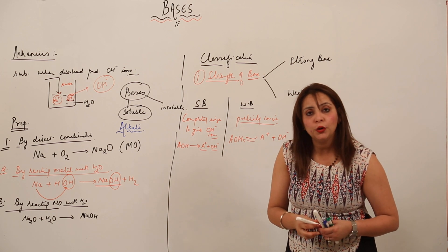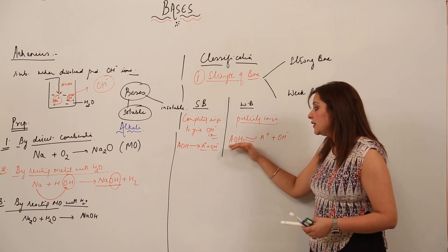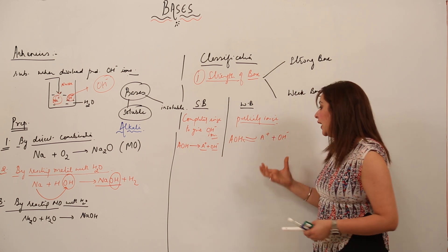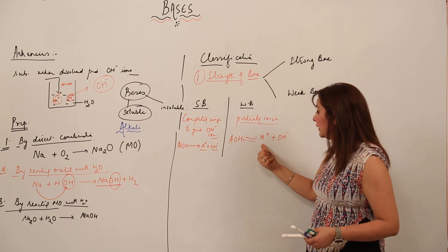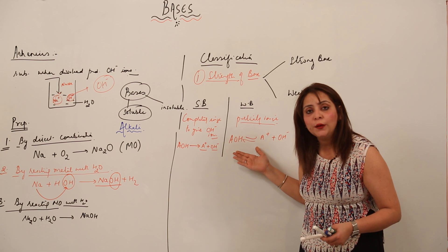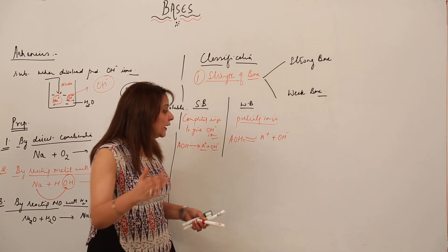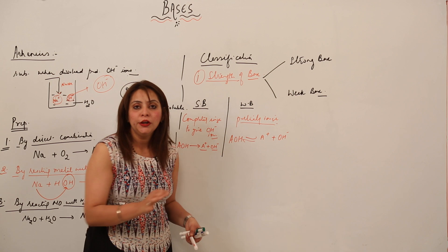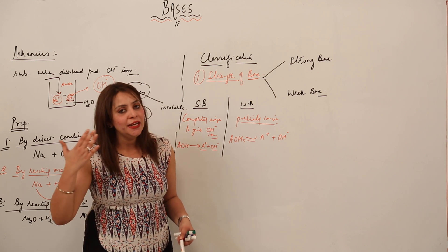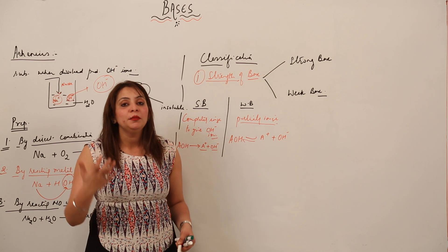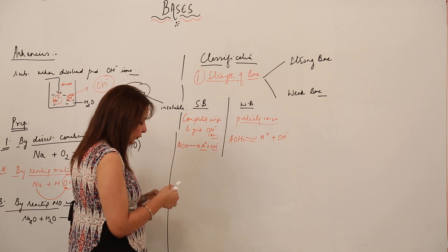So there is an equilibrium between the ions and the un-ionized molecule. In solution, we get to see A⁺, OH⁻, and also the undissociated AOH molecule. This means it gets partially ionized — not completely. If it had completely ionized, we would not see the AOH molecule remaining. So when a base dissolved in water gets partially ionized, it is a weak base; if completely ionized, it is a strong base.